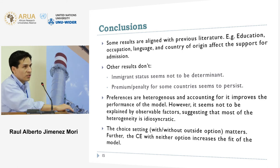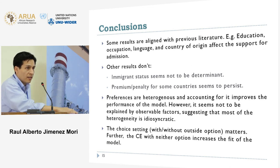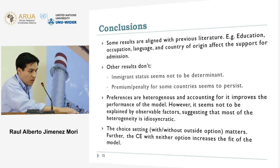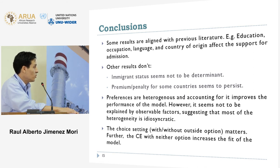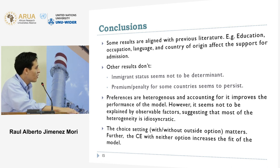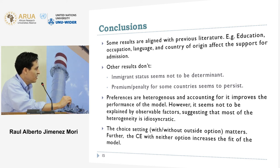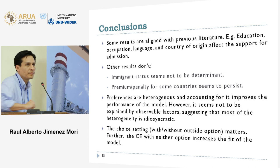The other conclusions are more methodological. Heterogeneity matters and increases the fit of the model. The heterogeneity I found does not seem to be explained by observable characteristics — it appears to be idiosyncratic. Finally, choice settings also matter. I found that choice settings with neither options are more relevant and increase the fit of the model — they are probably a more realistic and more stringent choice situation. That's it. Thank you.